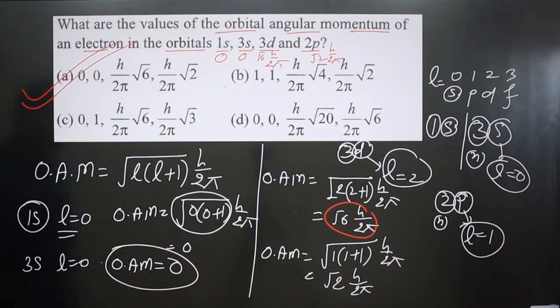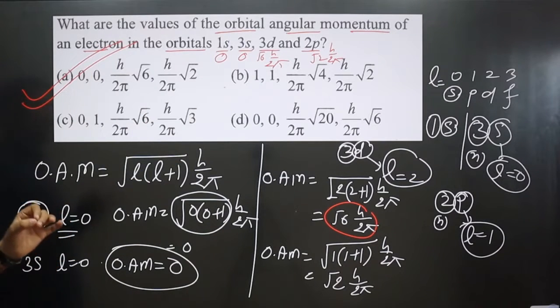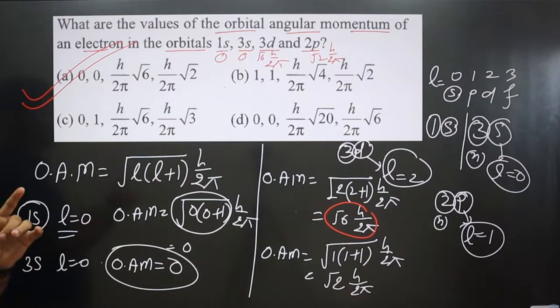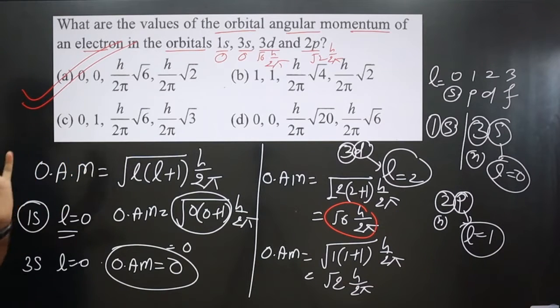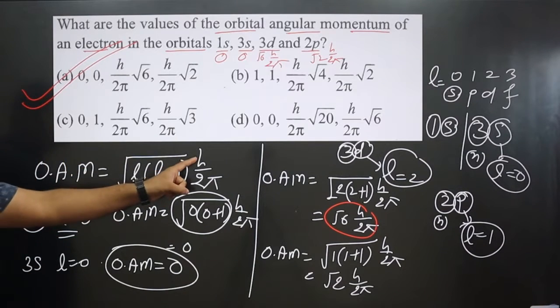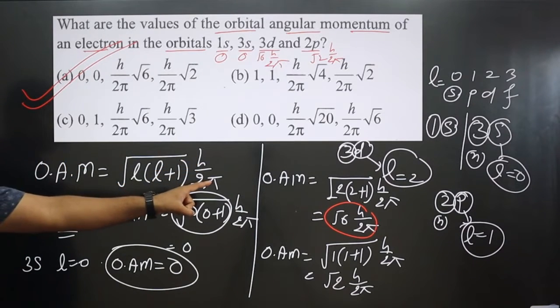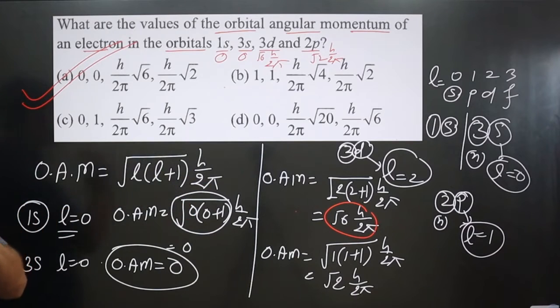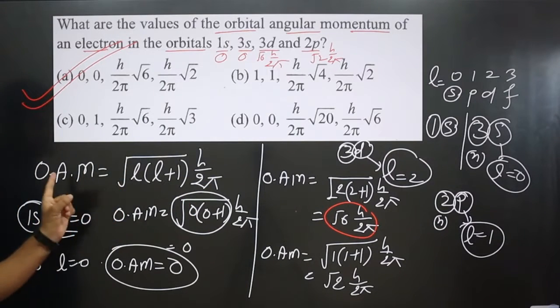Always keep in mind: orbital angular momentum depends only on the azimuthal quantum number l, because h, π, and 2 are all constants. So if the l value changes, the orbital angular momentum value also changes. If you like this video, please share and subscribe to the channel.